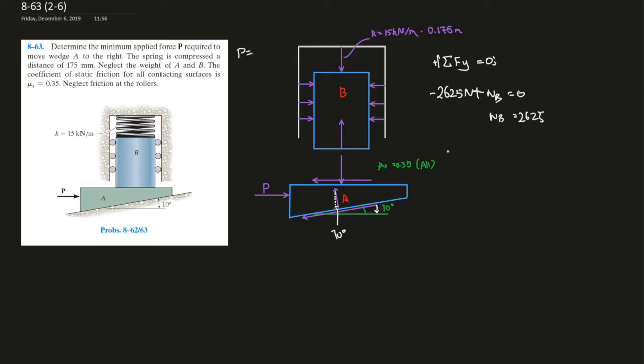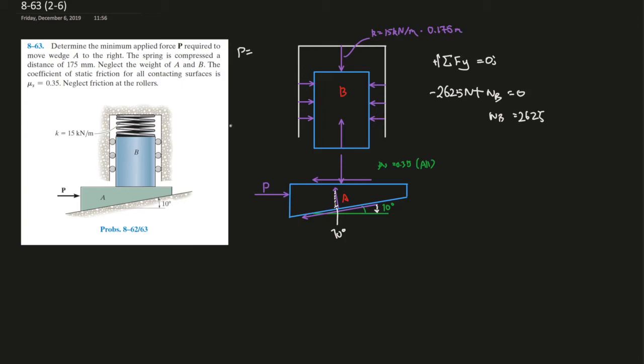And now, sum of the forces in x direction. These forces are the normal force and they're equally distributed to the left and right of the object B here. So they all cancel out equals 0.